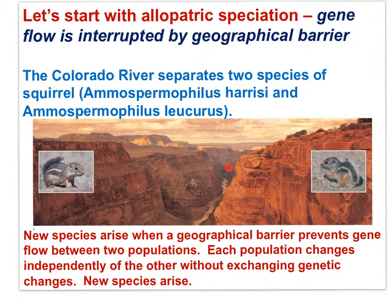As you can see, this river canyon separates two populations of squirrels. When they become isolated, these two populations no longer exchange alleles. Thus, any change in either population due to mutation or selection results in the accumulation of unique genetic change. Over time, the two populations become different species, as they have here.